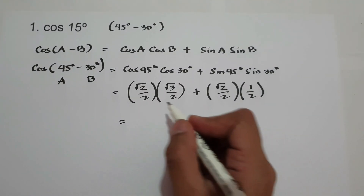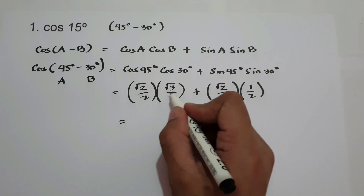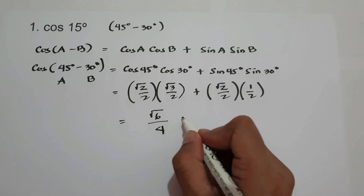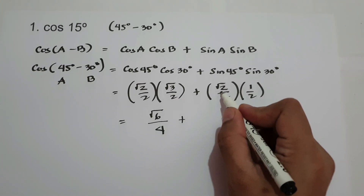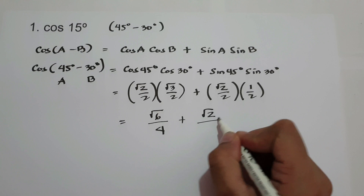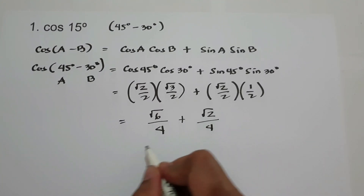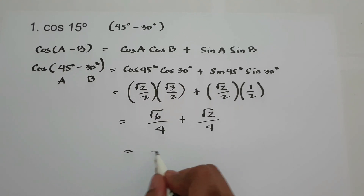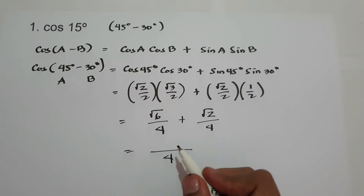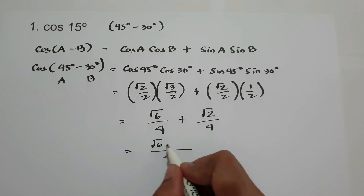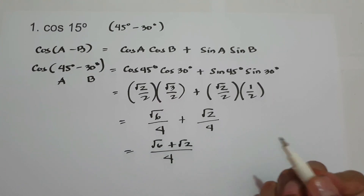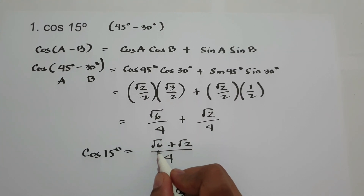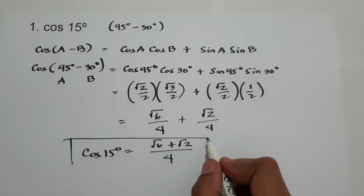To simplify, we multiply: √2 times √3 is √6, and 2 times 2 is 4, plus √2 times 1 is √2, and 2 times 2 is 4. Since we are adding fractions with the same denominator, we write √6 plus √2 over 4. Therefore, cosine 15 degrees is (√6 + √2)/4, and this will be our answer.